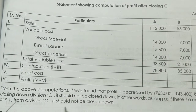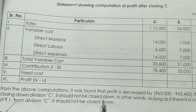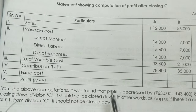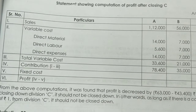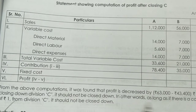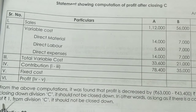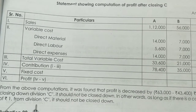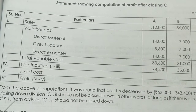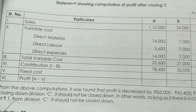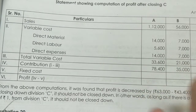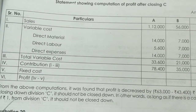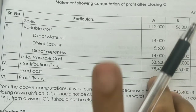Therefore, Division C should not be closed down. As long as Division C's contribution covers its variable costs, closing it would reduce overall profit. The division is still making a positive contribution.